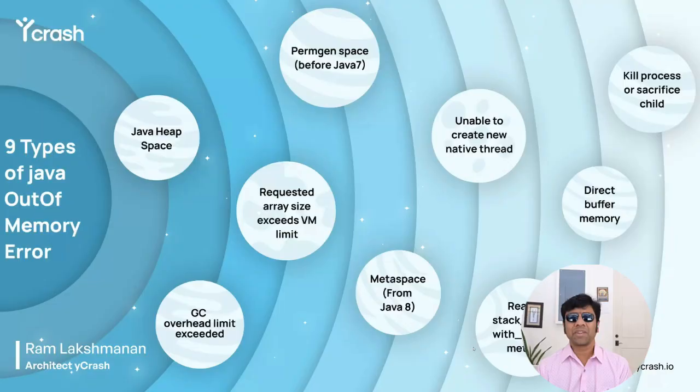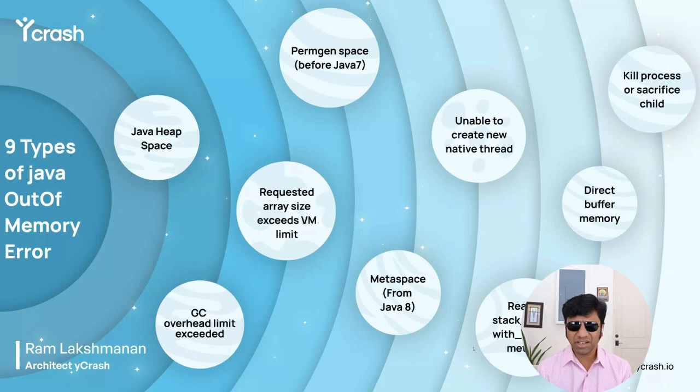In this video we are going to be discussing about java.lang.OutOfMemoryError direct buffer memory. As we discussed in the earlier video, there are nine different types of out of memory error. The seventh type of out of memory error is direct buffer memory.